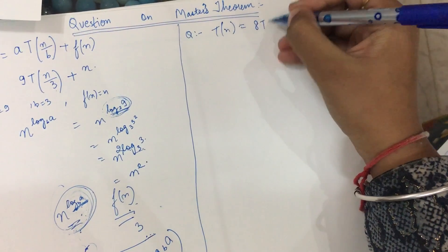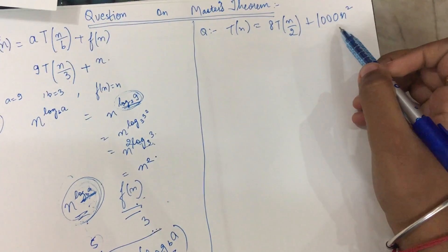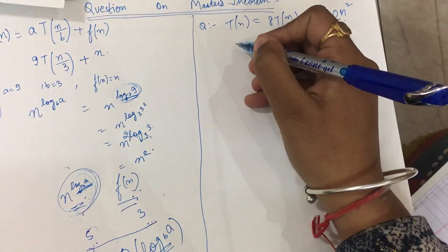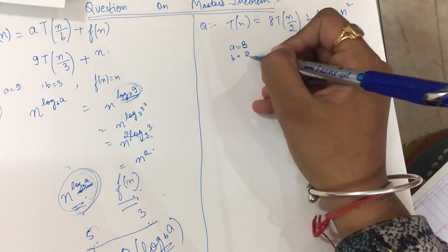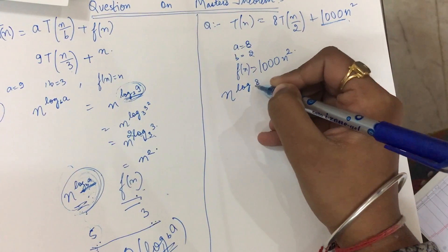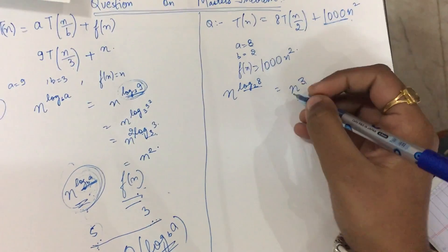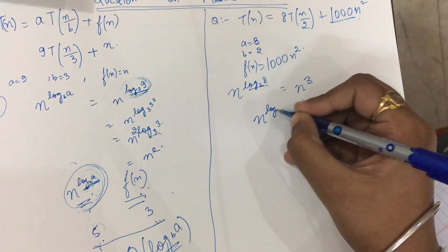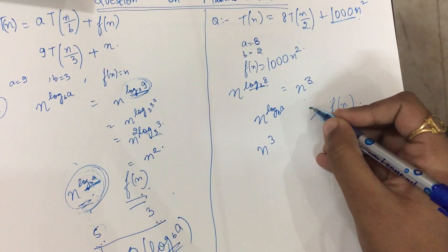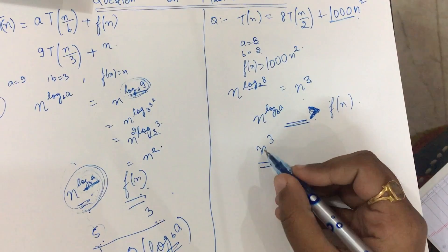Let's take a slightly trickier example: T(n) = 8T(n/2) + 1000n². One thing to keep in mind is that you never take the constant coefficient into consideration. Here a = 8, b = 2, and f(n) = 1000n². So n^(log_b a) = n^(log base 2 of 8) = n³. Now I see one side has n³ and the other has 1000n².